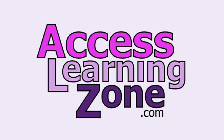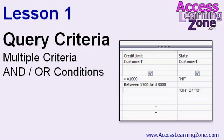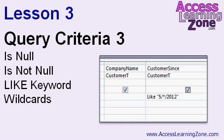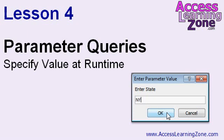Now let's take a closer look at exactly what's covered in today's class. In lesson one, we're going to learn more about query criteria — multiple criteria and using different AND and OR conditions to get exactly the data you want. In lesson two, we're continuing with query criteria, learning about the NOT keyword, how to show or hide fields from query results, and working with dates and times as query criteria. In lesson three, we'll talk about the ISNULL and ISNOTNULL keywords, the LIKE keyword, and performing wildcard searches. In lesson four, we'll learn about something very powerful called a parameter query, where you can specify a value when the query runs.